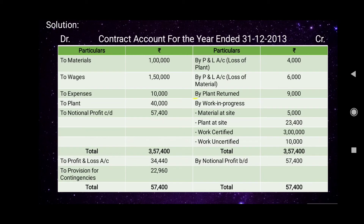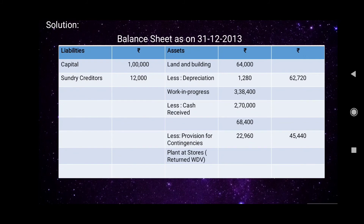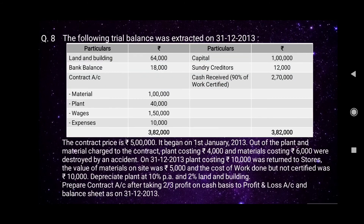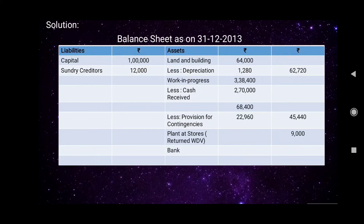Plant returned is rupees 9,000, recorded on the assets side of the balance sheet as 'Plant at Stores (returned on WDV method)', amount rupees 9,000. Bank balance from the trial balance is rupees 18,000, recorded on the assets side as 'Bank', amount rupees 18,000.